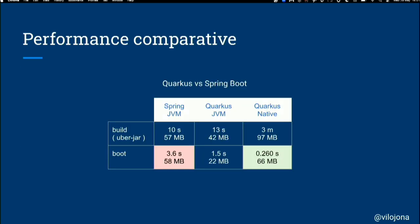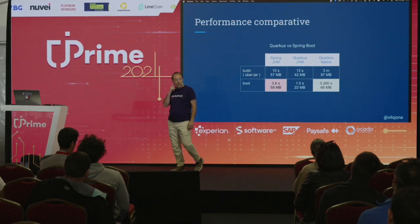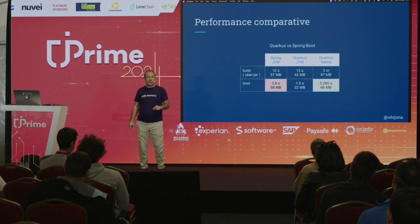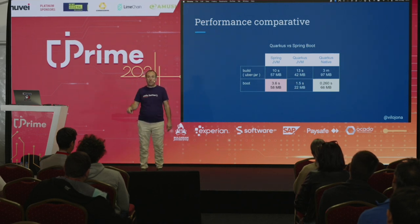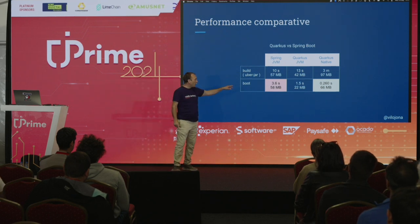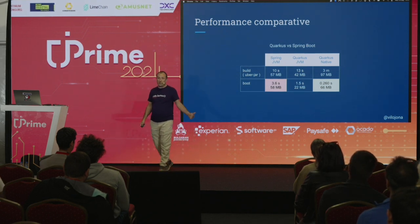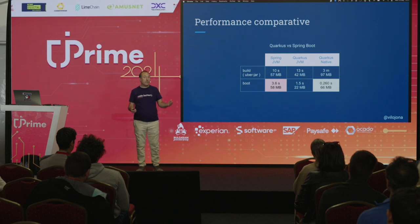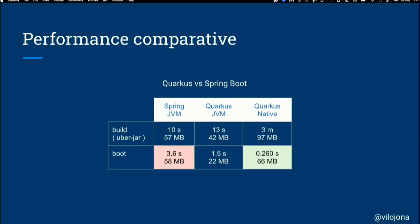Comparing a Spring application, it takes around four seconds to start. Going to Quarkus, it takes one and a half seconds. But going native — which only involves adding -Pnative in the command line without touching anything — we move from around four seconds to more than 200 milliseconds. Definitely something very important to try, even if you're going to lambdas or just to increase the density of your cluster.